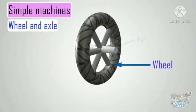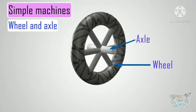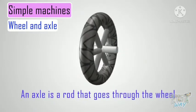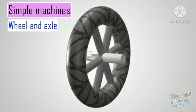This is a wheel attached to an axle, and the axle is a rod that goes through the wheel. This lets the wheel turn.